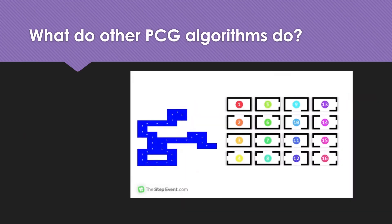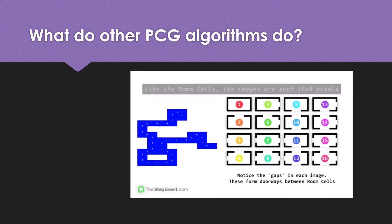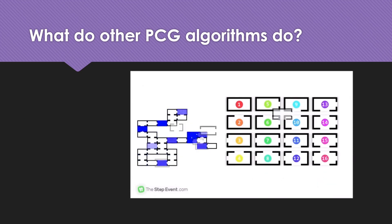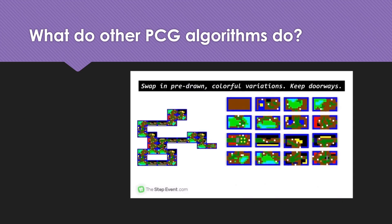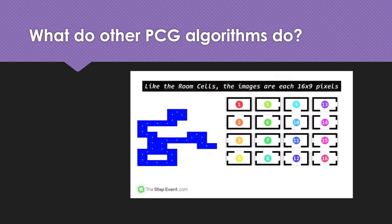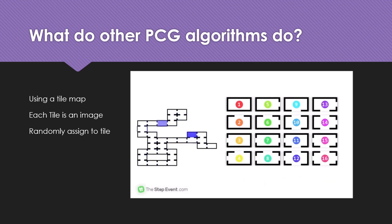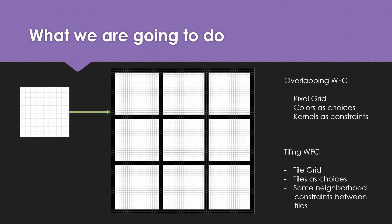What other PCG algorithms do to address this problem is use a tile grid where each tile represents an image. By mapping images to tiles, they are able to account for a lot more detail while generating procedural results. Using a tile map, each tile is an image, and random assignment of tile maps to the output can create a lot more detail.